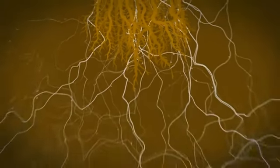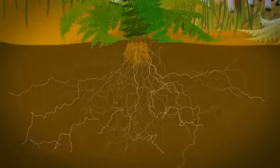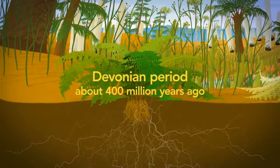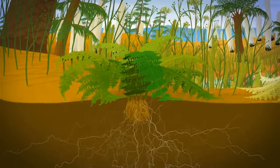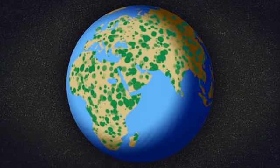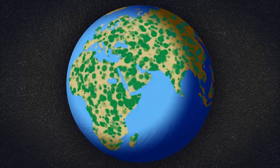The fungi act like an extended root system. The relationship between plants and glomeromycota goes back about 400 million years, about the time that the earliest land plants evolved. Today, this fungus lives in symbiosis with about 80% of land plants, contributing to their health and success.